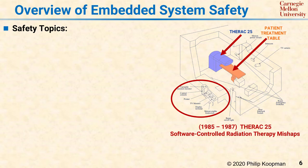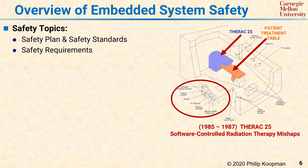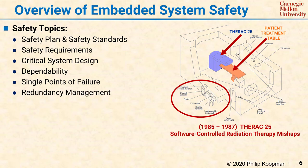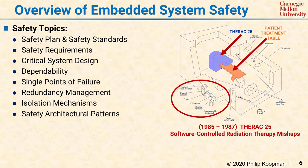These include using safety plans and safety standards, creating safety requirements, using critical system design techniques, ensuring dependability, avoiding single points of failure, managing redundancy properly, using appropriate isolation mechanisms, and following well-understood safety architectural patterns.